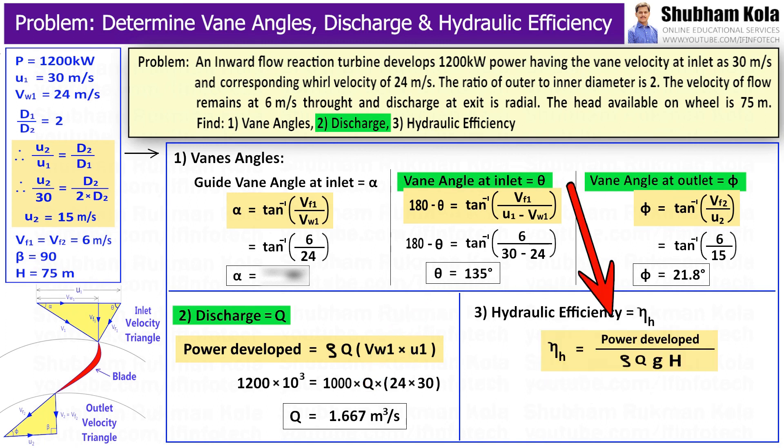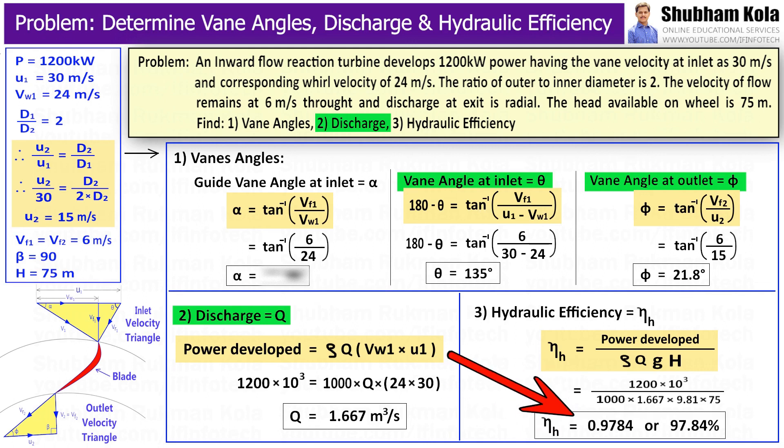And hydraulic efficiency can be calculated by formula, that is power developed by runner upon input power, where power developed by runner is given as 1200 kW and input power is ρQgH. So by putting all these values, we will get hydraulic efficiency as 97.84%.